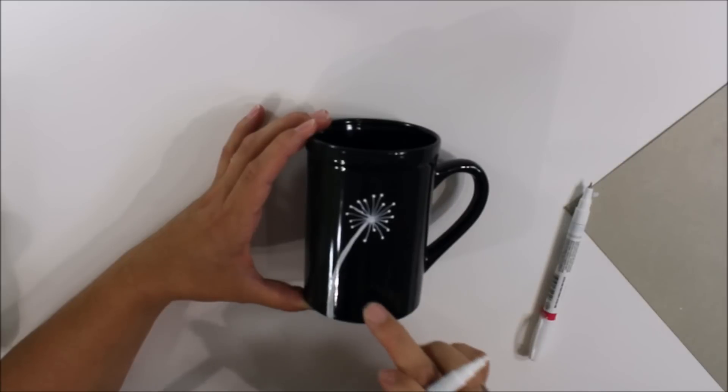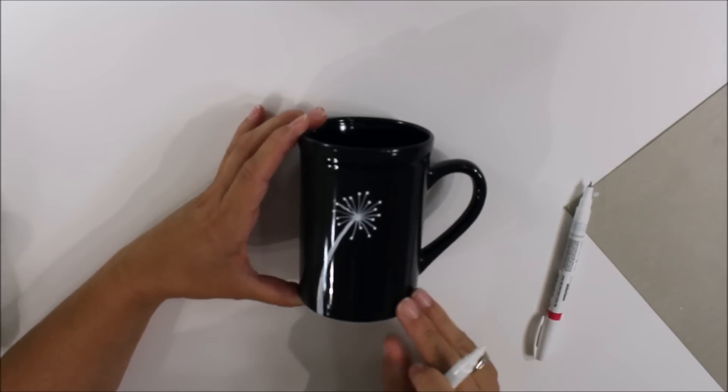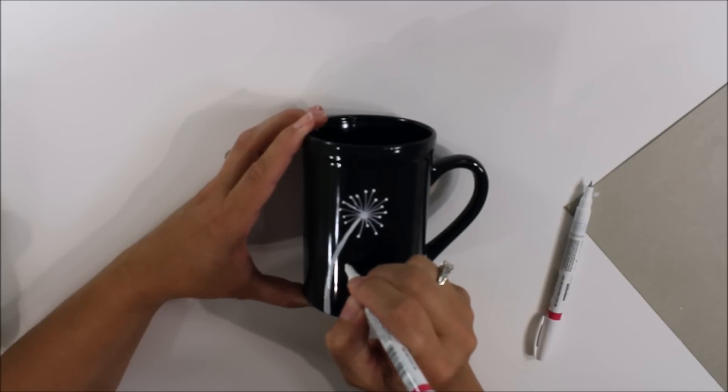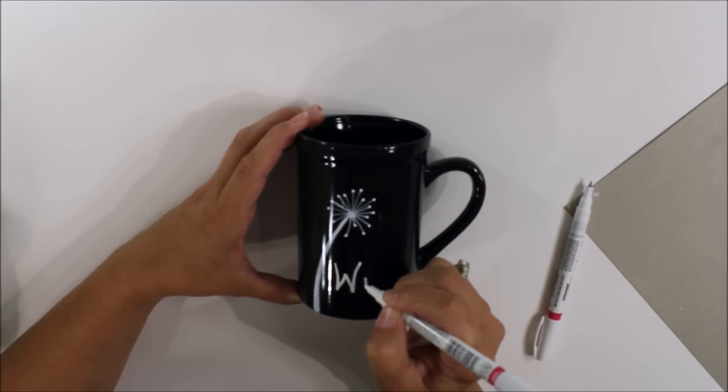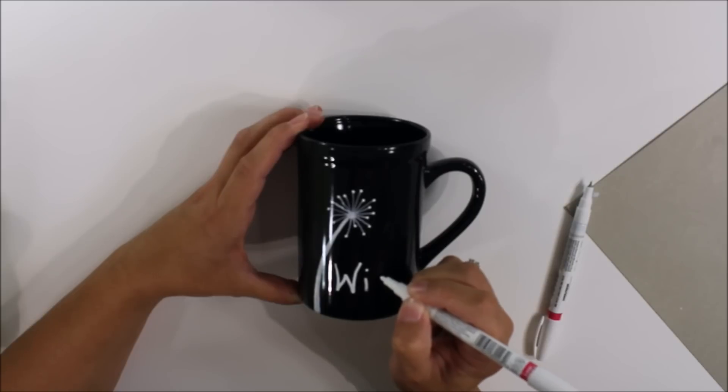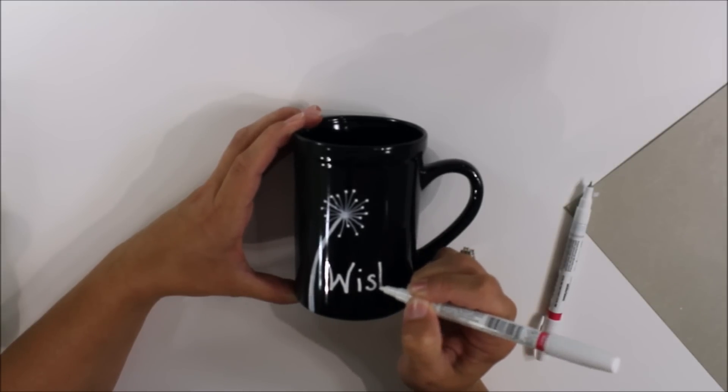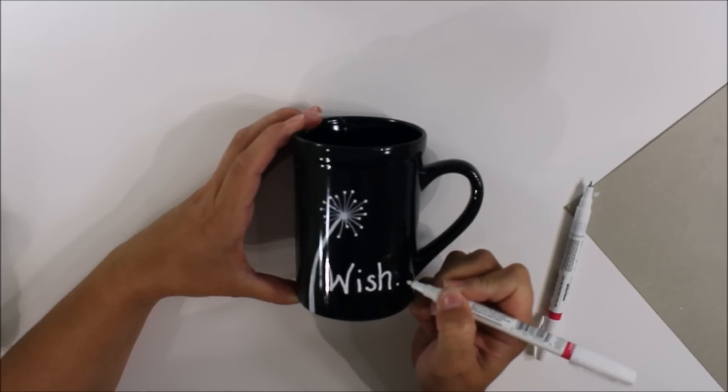And then I'm going to write the word wish right down here at the bottom. Well, you don't have to do this part if you don't want to. I do like the word wish though, and my handwriting's not super terrible, but I don't actually like it a whole lot either. But just do your best and write out the word wish, and I'm just going to put three little dots after the word wish.